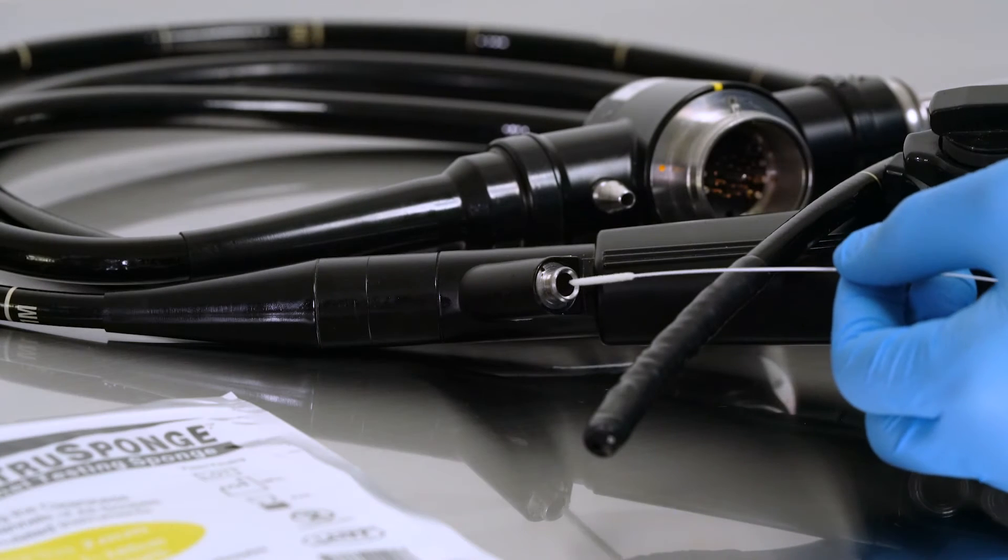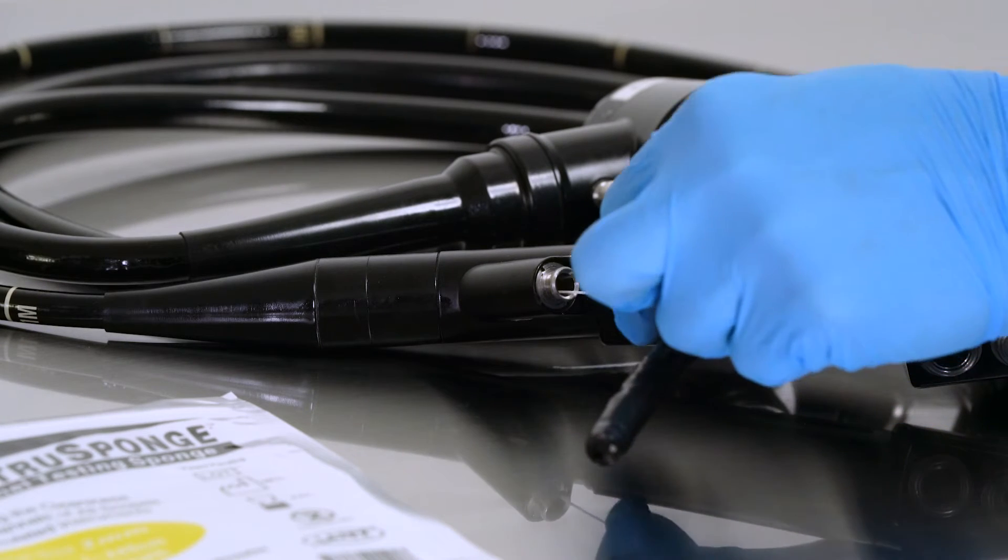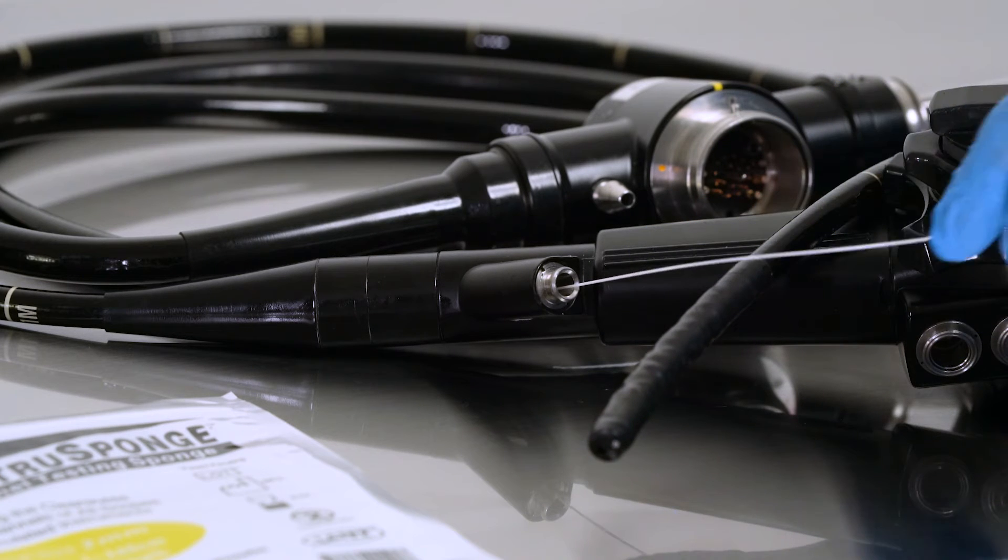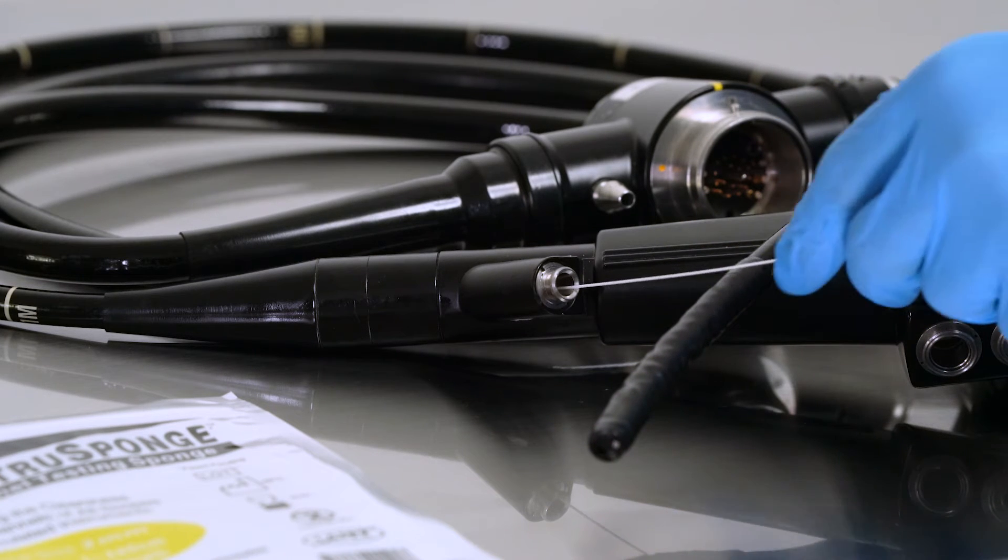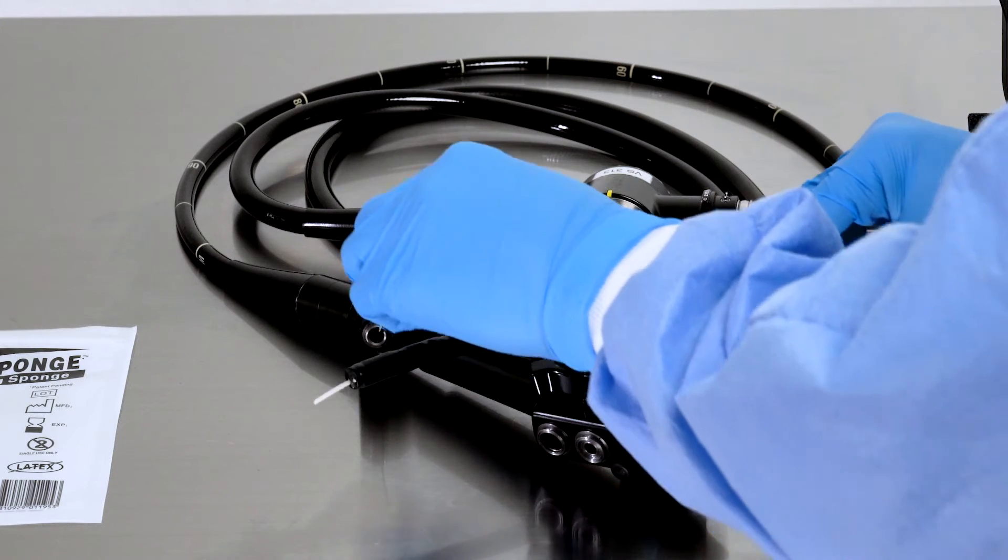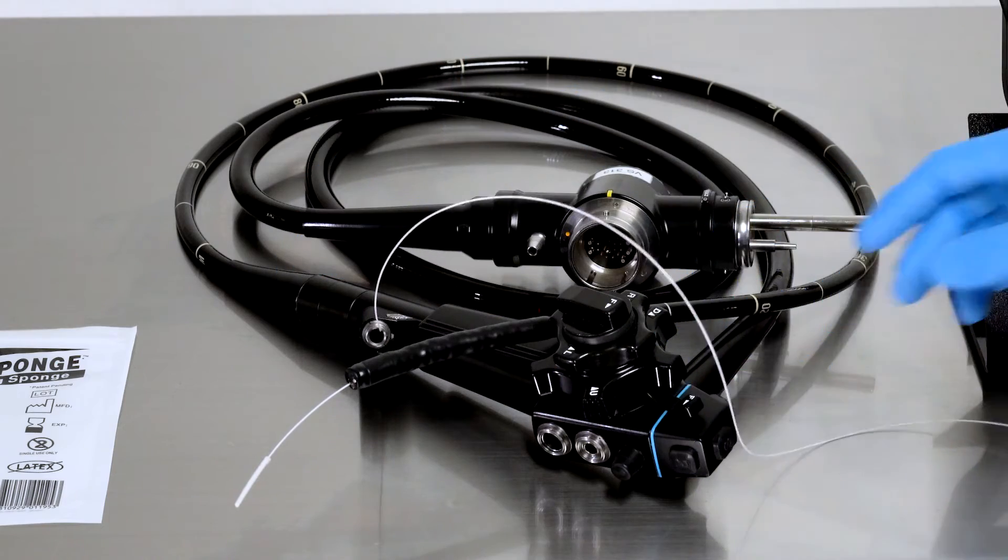Without touching the sponge, place the sponge tip into the port and gently push it through the scope until it comes out of the distal port. As you maneuver the test Instra sponge, avoid touching the sponge. Push the wand through the scope allowing the sponge to exit the port.